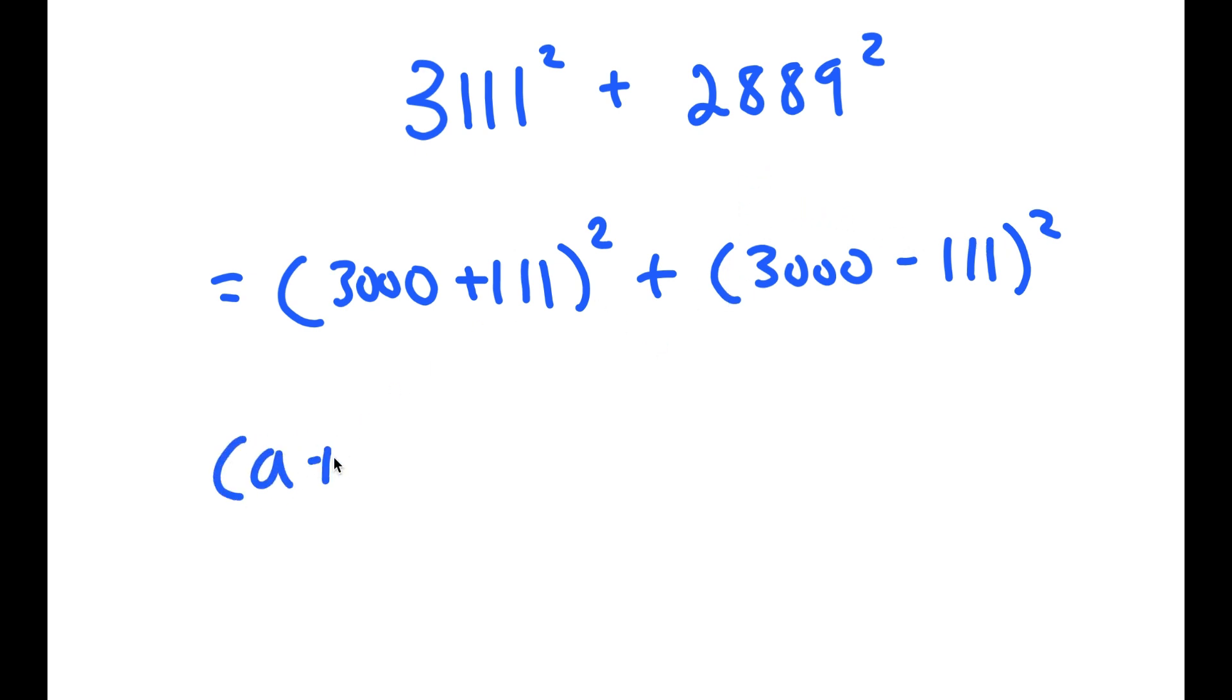Now, if I have something in the form a plus b squared, this is equal to a squared plus 2ab plus b squared. And if I have something in the form a minus b squared, this is equal to a squared minus 2ab plus b squared.